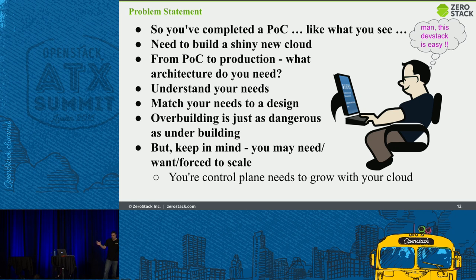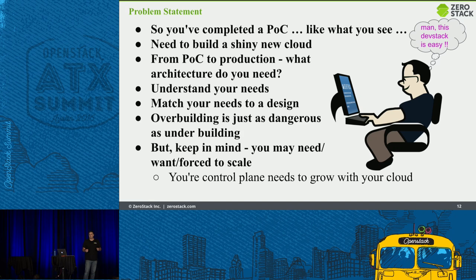All those inputs will drive your decisions on your control plane, and ultimately on your data plane. One specific note you'll see throughout my slides: if your scale is a dozen, a couple dozen, or maybe 100 to 200 hypervisors, complexity can be a killer.